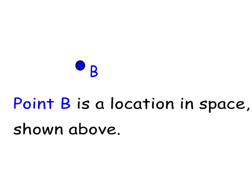Space is what surrounds us, and a point is a location in space. We designate a point by using a capital letter, a unique letter for each and every point. So in this case, point B is shown.